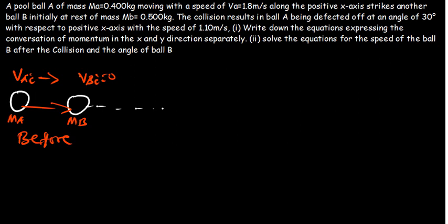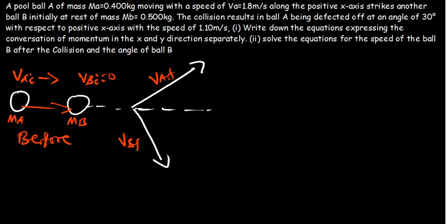After collision, A will be moving in one direction and B will be moving in another direction. We are going to have the velocity of A final and the velocity of B final. There are going to be angles formed between the x-axis and each velocity vector — theta A for the velocity of A, and theta B for the velocity of B.